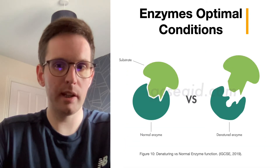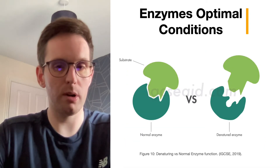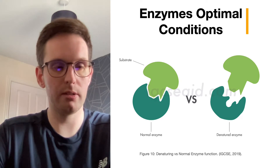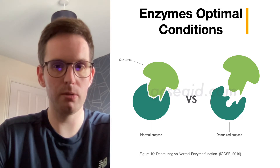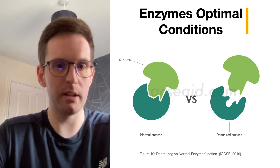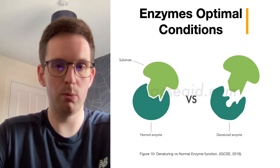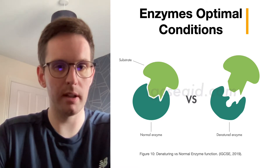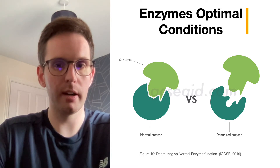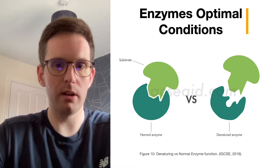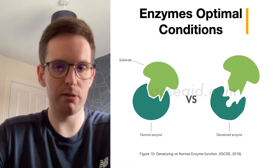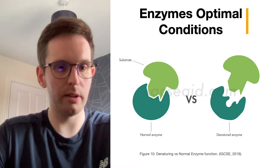Enzymes that are not in their optimal conditions — for example, temperatures too high or too low, or pH too acidic, too alkaline, or too neutral — will begin to denature. This is a process in which the active sites become warped, meaning that substrates can't fit into the enzymes and no catalysed reaction takes place. This is known as denaturing.